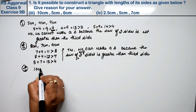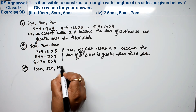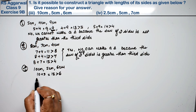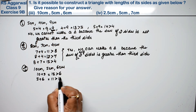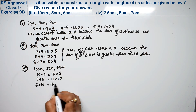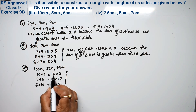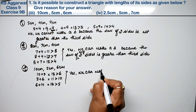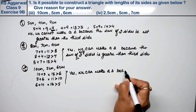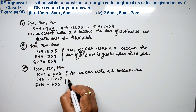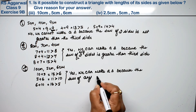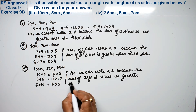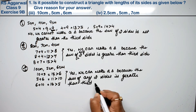Third part: the sides are 10 cm, 5 cm, and 6 cm. Checking: 10 plus 5 is 15, which is greater than 6. Then 5 plus 6 is 11, which is greater than 10. And 6 plus 10 is 16, which is greater than 5. So yes, we can make a triangle, because the sum of any two sides is greater than the third side.